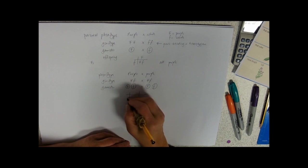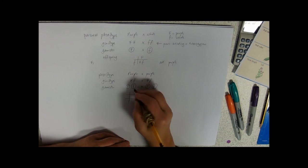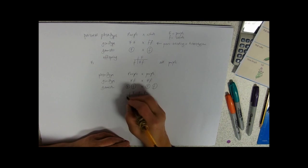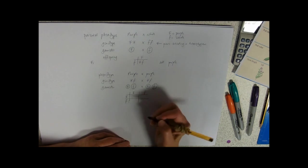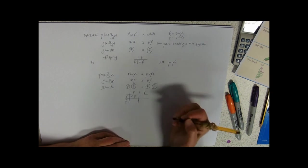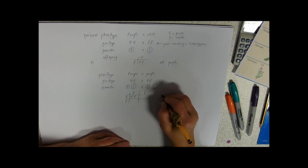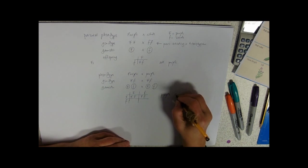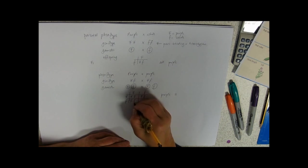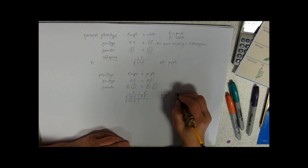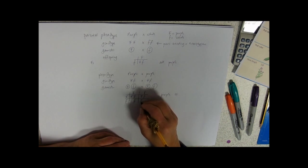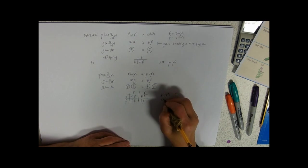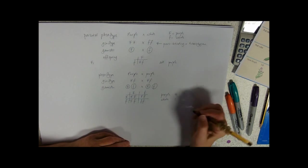So our Punnett square now, to work out what our offspring are going to be like. Parent one, along the top. Parent two, down the side. We're going to get a big F, big F plant. And that is going to be purple flowers. One. We're going to get a big F, little f. And of course, in the heterozygous, the heterozygous, the dominant allele is expressed, also purple. Big F, little f. Dominant allele expressed, also purple. Little f, little f. It's going to be white. Two recessive alleles will give us the recessive characteristic.